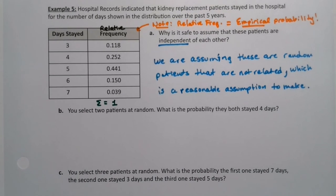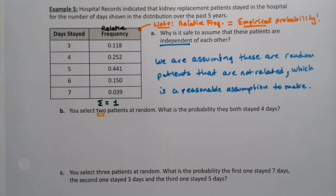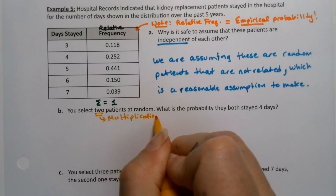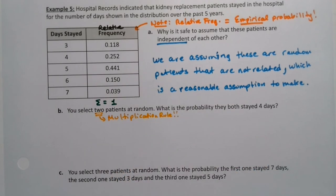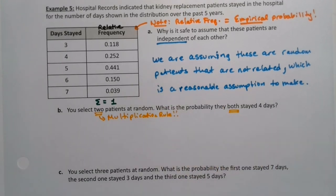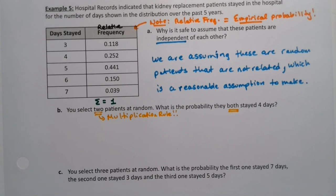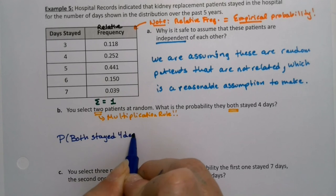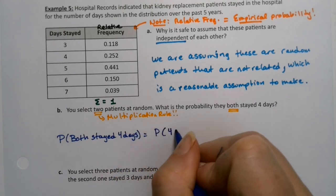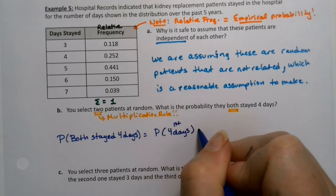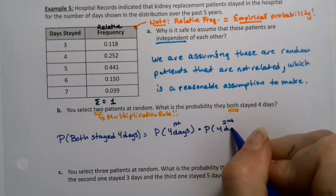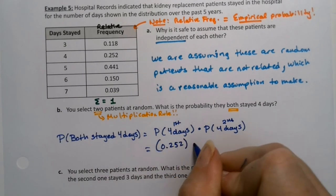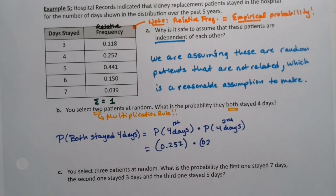You select two patients at random. Well, there's a cue. Once you see that, you know that you're using the multiplication rule in some form. Might be the multiplication rule, or it might be the at least one rule. We don't know which one yet, but since it's talking about both, it's multiplication rule. So we want both of them to have stayed four days. So two patients, we assume independent, so we want the probability that both stayed four days, which is the probability that the first one stayed four days times the probability that the second one stayed four days. Well, the probability of four days is 0.252.